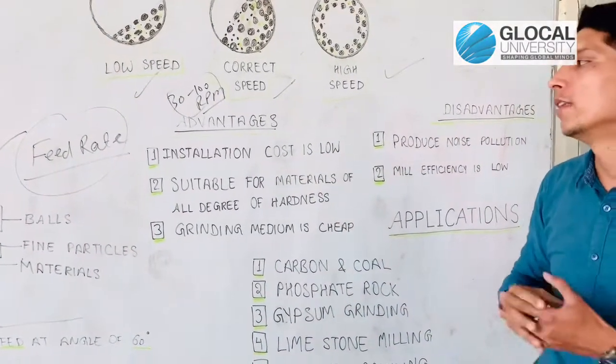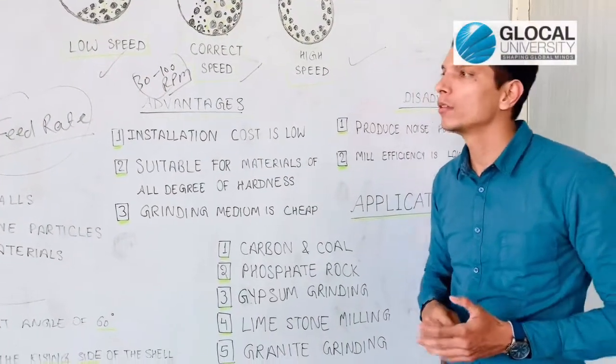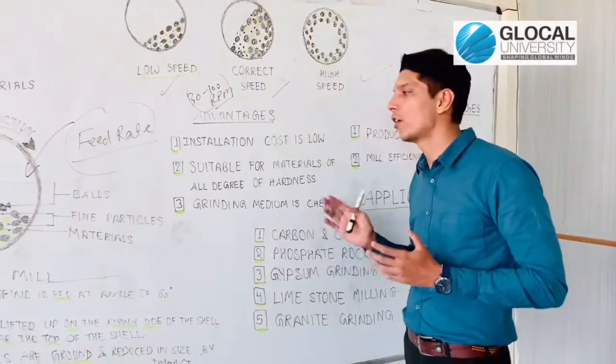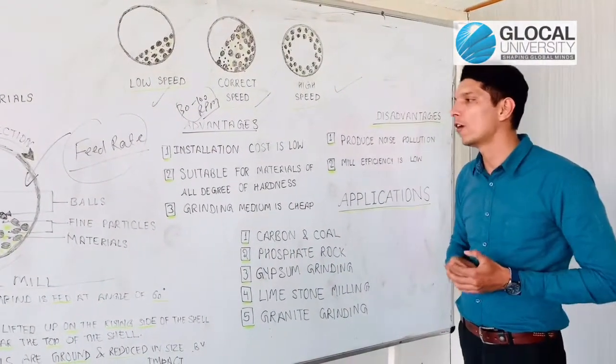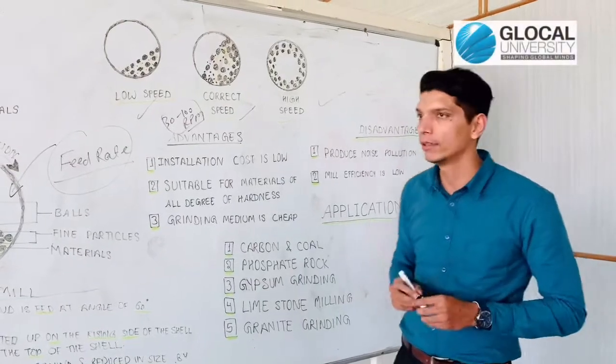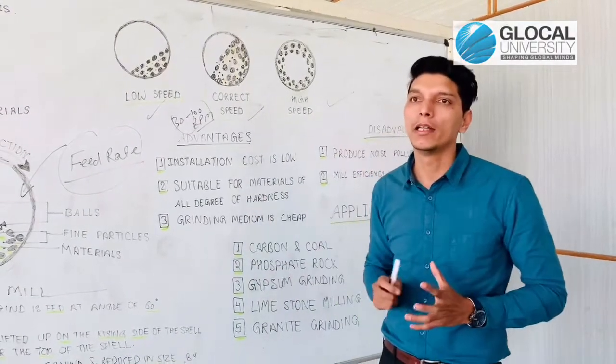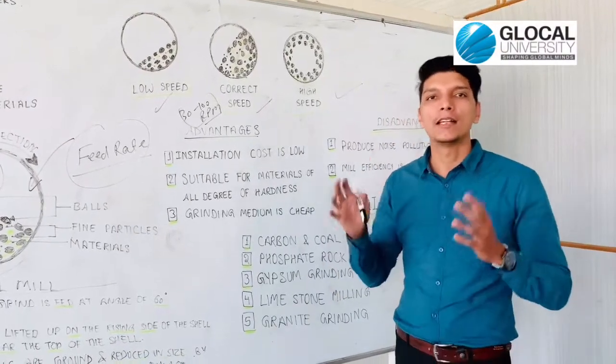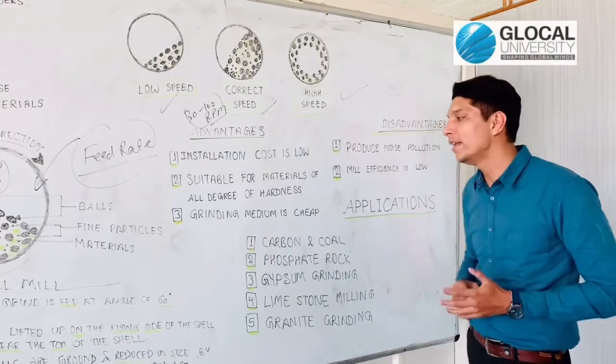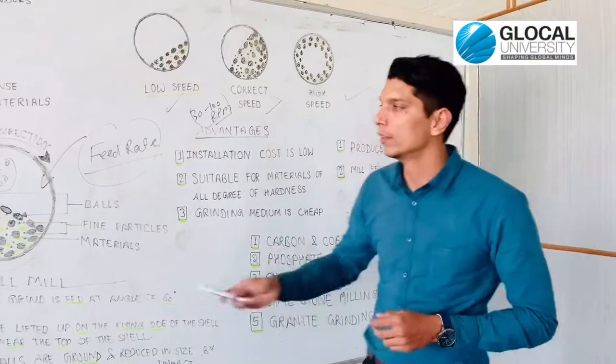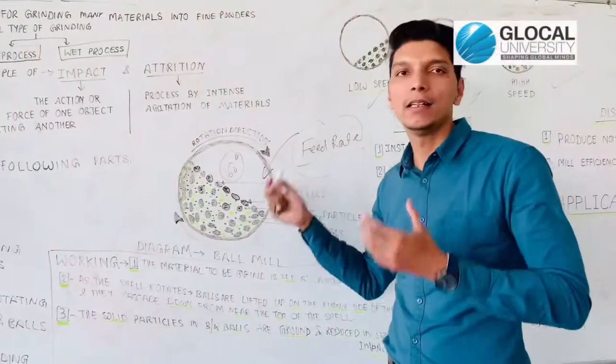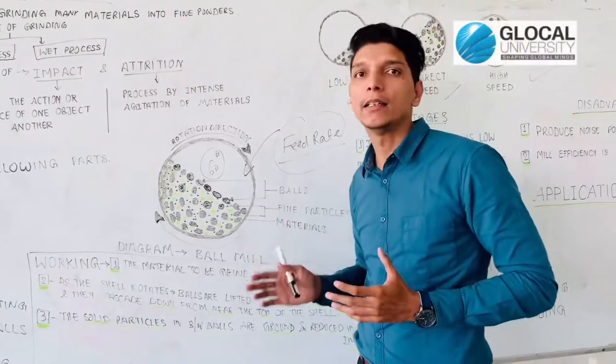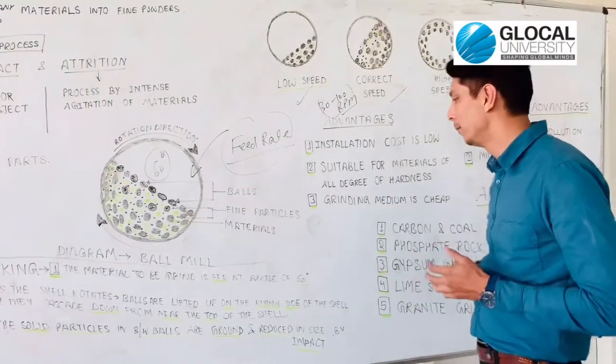Now advantages of ball mill. First advantage is installation cost is low because this mill is very small in size. Next, it is suitable for materials of all degrees of hardness. We can easily do the size reduction process. Next, grinding medium is cheap because this mill uses balls, which are not so costly.